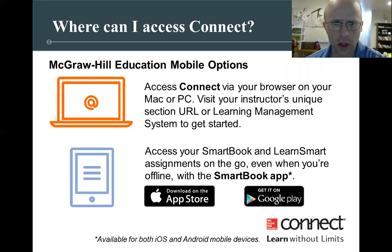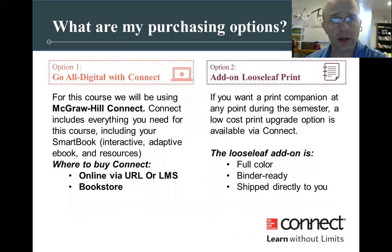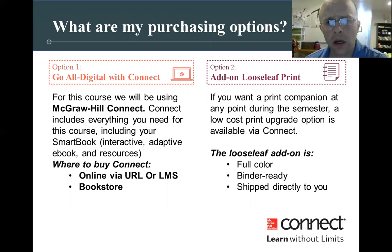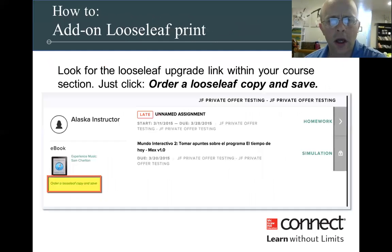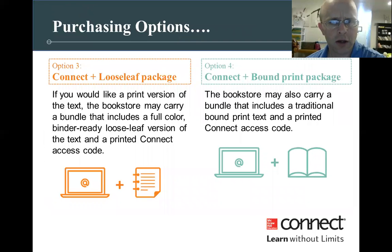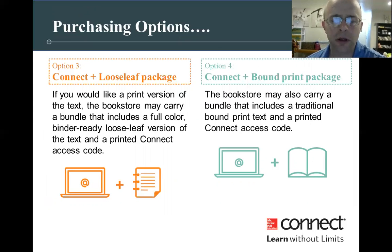You've got all kinds of purchase options. You can access Connect online and on the app, go all digital, or just Connect alone. I personally like to have a book, and your bookstore will often have a bundle — sometimes saving you more than $100 if you buy them together. You can also add on a loose leaf, which you can put in a binder — it's cheaper than the traditional hardback. And if you want the hardback, you can get the bound print package, which costs a little more, but I like having it to refer back to.